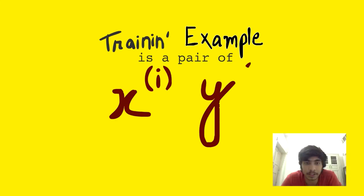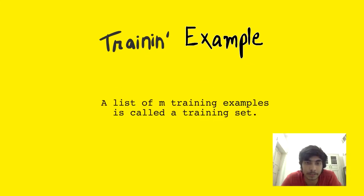A pair (X_i, Y_i) is called a training example and a list of M training examples is called a training set.